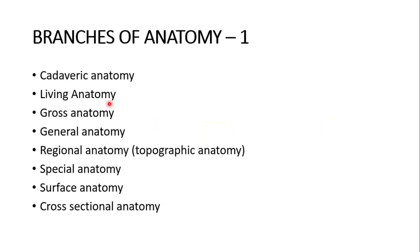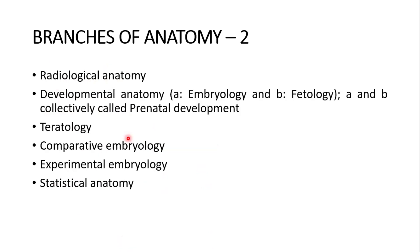So the branches — there are many of them. Branches of anatomy: cadaveric anatomy, living anatomy, gross anatomy, general anatomy, regional anatomy or topographic anatomy, special anatomy, surface anatomy, and cross-sectional anatomy. I am enumerating this, giving you a list, then I will discuss each of them briefly with their definition.